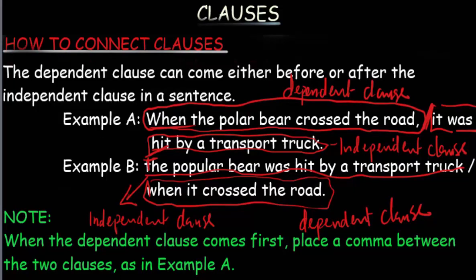But note: when the dependent clause — that is, the clause that has to rely on the main clause — comes first, place a comma between the two clauses. As you can see here, there is a comma. If the dependent clause is coming first, please always use a comma.